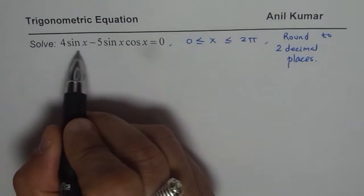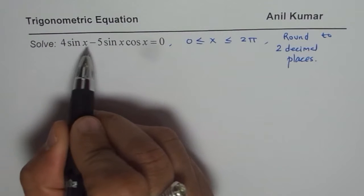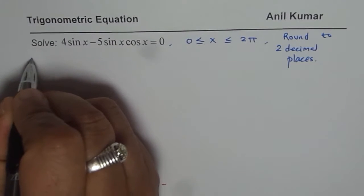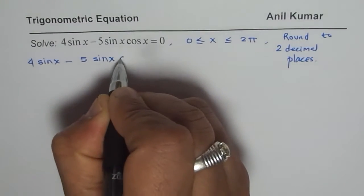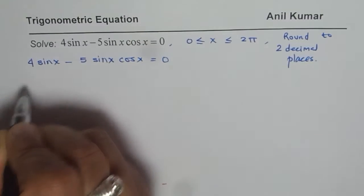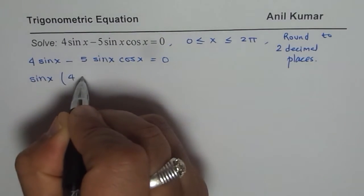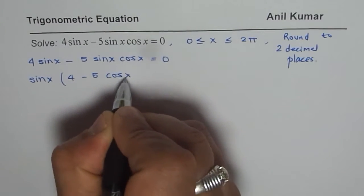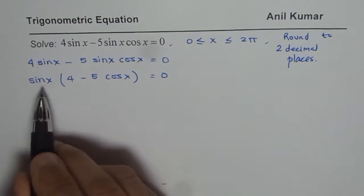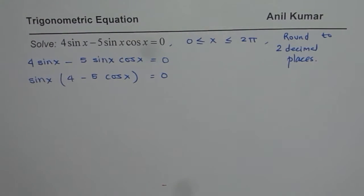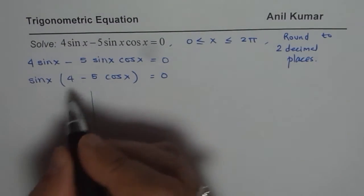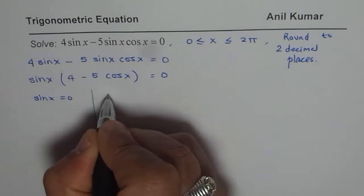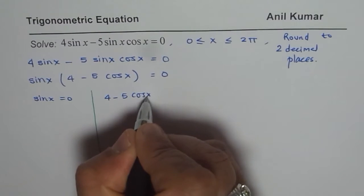Now to solve such an equation factoring is a good technique. 4 sin x minus 5 sin x cos x. Sin x is common. So I will factor sin x. Once I factor sin x I get 4 minus 5 cos x equals to 0. It really means that we have two sets of combinations. One could be sin x equals to 0. The other one could be 4 minus 5 cos x equals to 0.